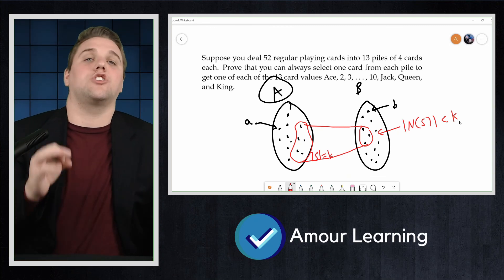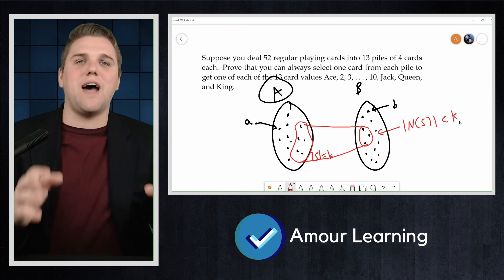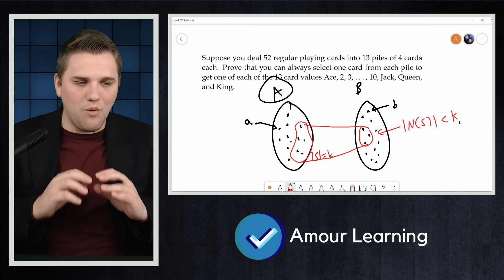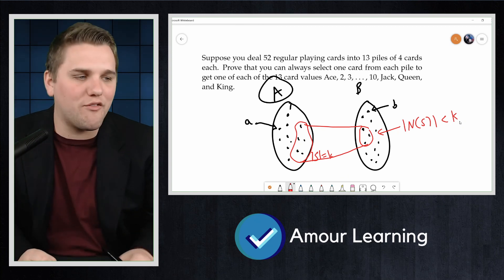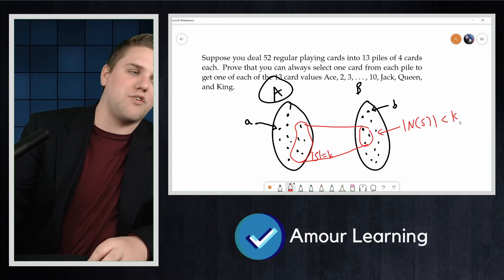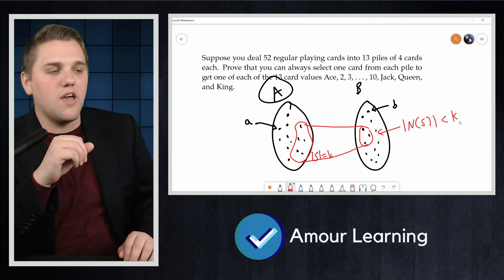Thus, the matching condition holds, so there is a matching required. And we've proven that we can always select one card from each pile to get one of each of the 13 card values: Ace, 2, 3, and so forth.